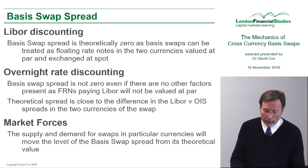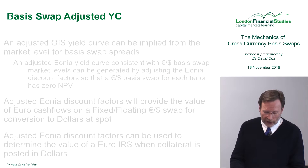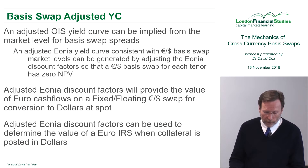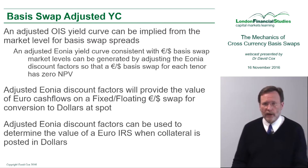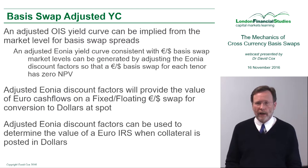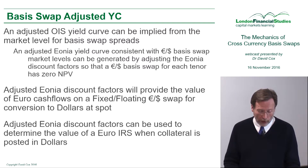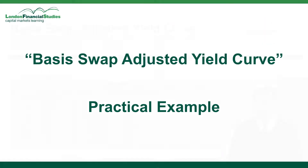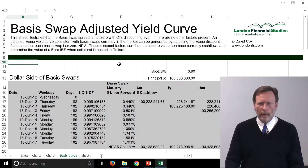To see how we can work out what type of adjustments we need to make to the rates which we're going to be using for discounting, it's worth taking a look at how we might construct a yield curve with these basis swap adjusted rates. This spreadsheet is designed to illustrate how we can calculate a basis swap adjusted yield curve.